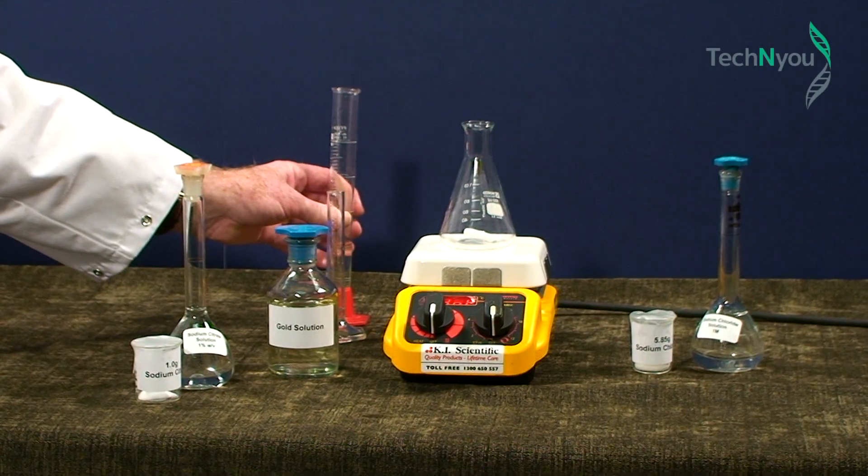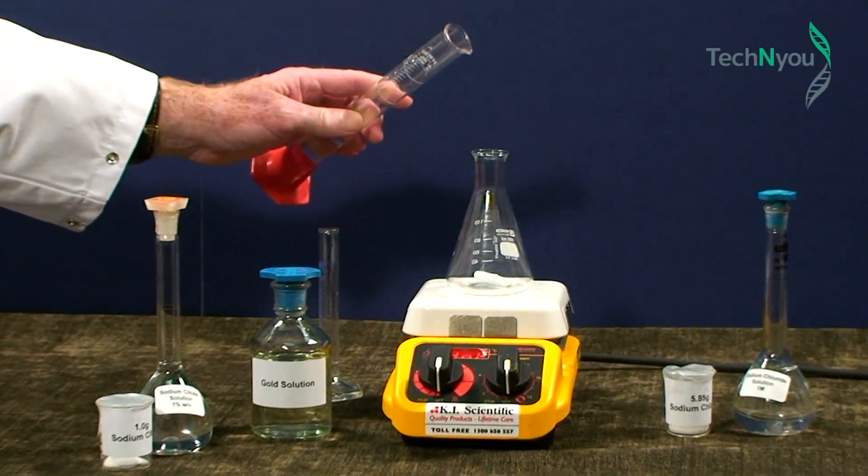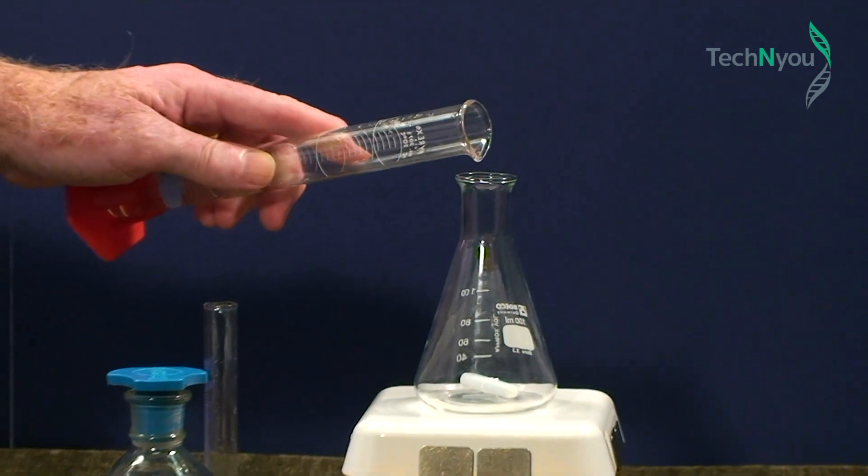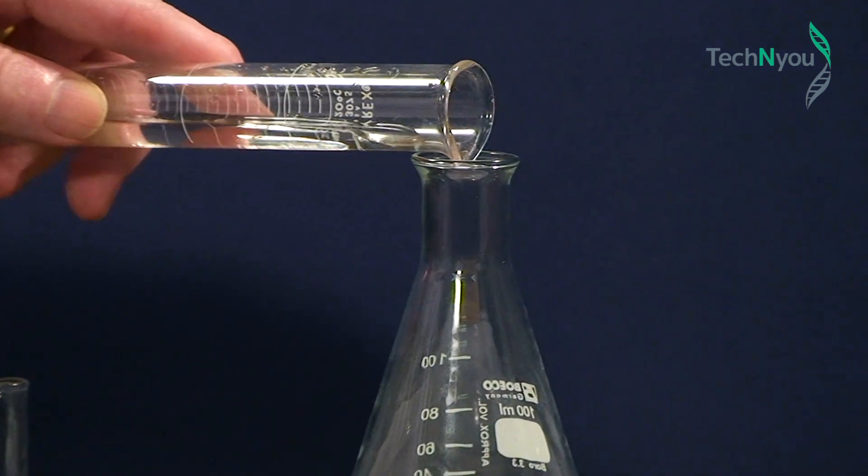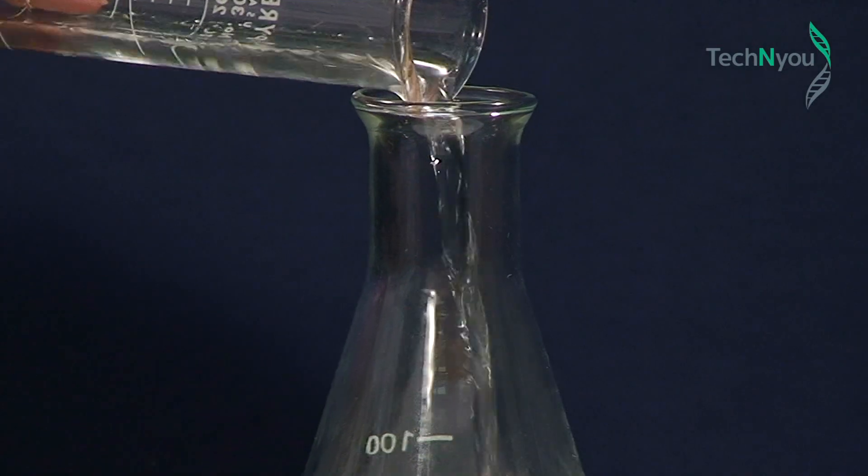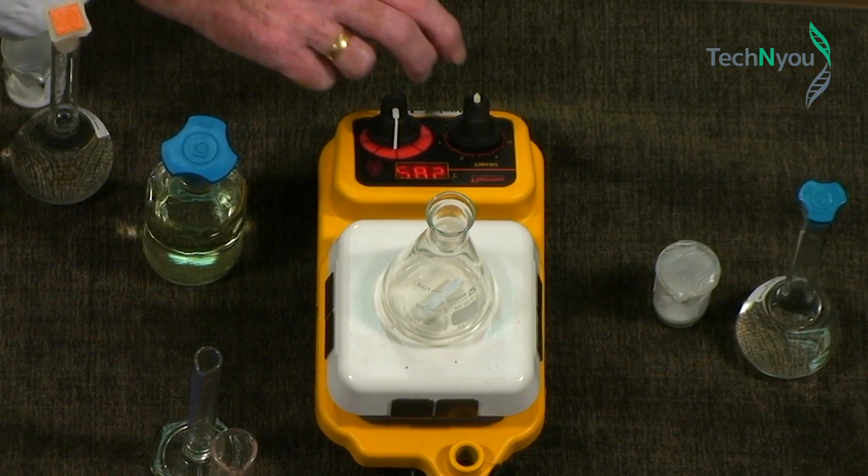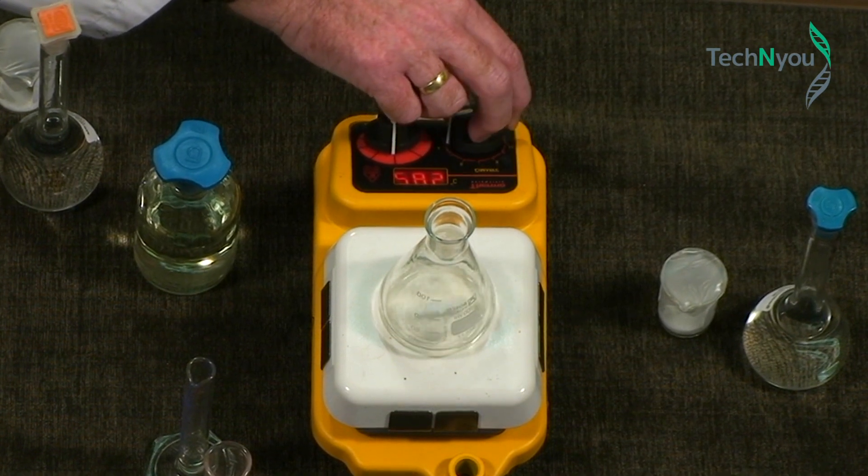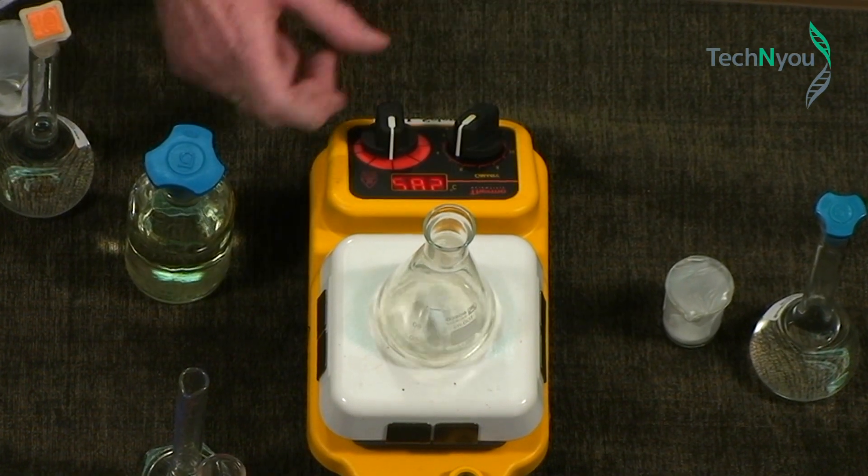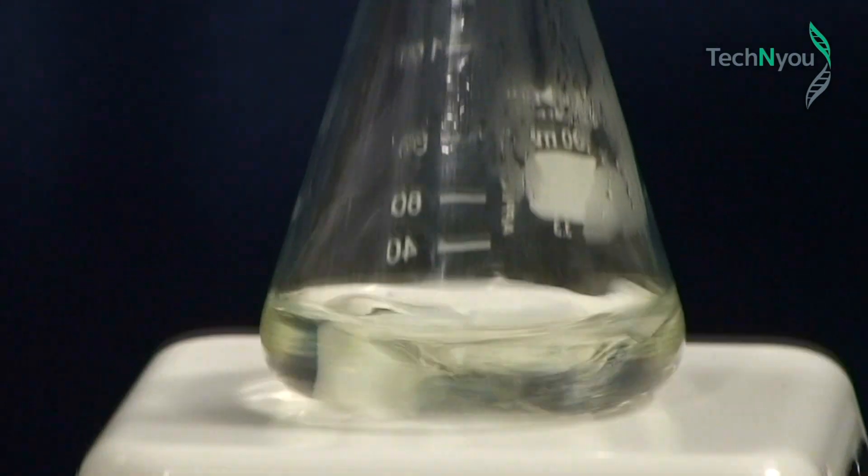Now let's make some nanoparticles. We'll start by adding 20 ml of the gold solution to the conical flask. We'll heat this solution until it boils, which usually takes 4 to 5 minutes. We will just keep it stirring to ensure it heats evenly.